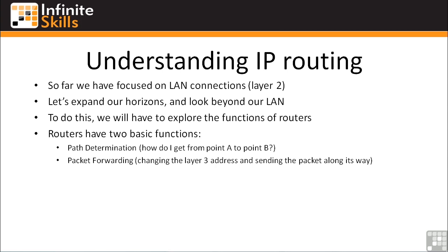On large enterprise networks, you'll have multiple routing protocols that are redistributed different ways. You'll have different speed WAN links that service different networks, and it can get very, very complex to force the traffic to go the direction you want. And that's not even getting into failovers and redundancies and so on and so forth.